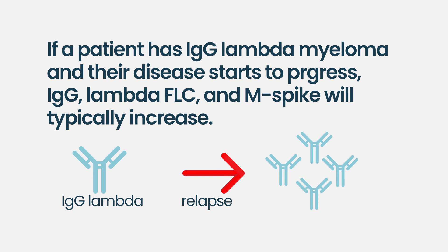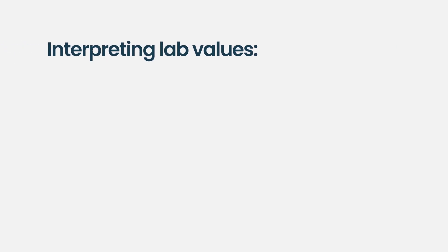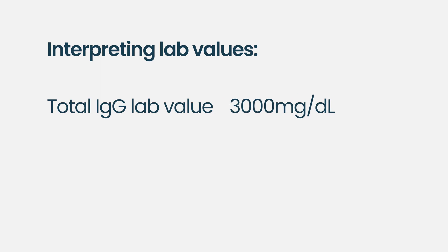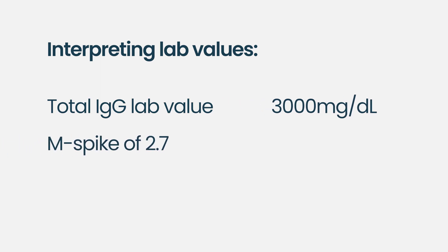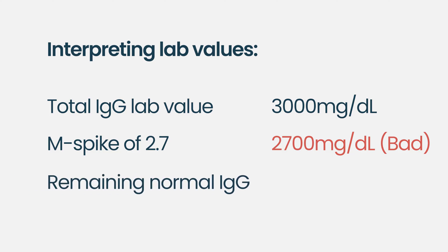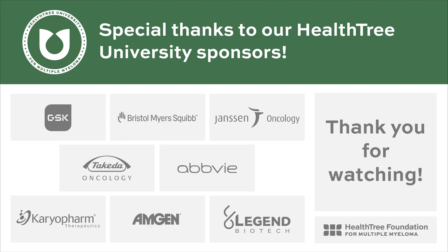The M spike captures all the bad protein. Think of IgG as having both good and bad — you have normal IgG alongside myeloma IgG. So if your total IgG is 3,000 and your M spike is 2.7, that means 2,700 of that 3,000 is bad and only 300 is good. We look for all of these numbers to go up or down — in general, when those numbers go up, more bad cells are growing; when they go down, bad cells are dying.